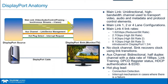This slide we could call DisplayPort Anatomy. Notice that the main link at the top has four lanes, four pairs, and it is a unidirectional high-bandwidth channel used to transport video, audio, and associated metadata and protocol control elements. Because it transfers video and audio, it has to be a low-latency channel as well. The AUX channel shown in orange is a bidirectional half-duplex channel with a data rate of 1 megabit per second.